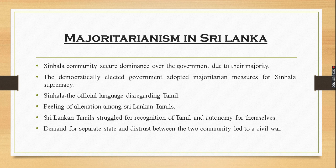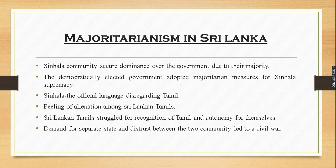They felt that the constitution of Sri Lanka and the government policies denied them equal political rights and equal opportunities. Because of this, relations between the Sinhala community and the Tamil community got strained over time. The Sri Lankan Tamils launched parties and struggles for the recognition of Tamil as an official language, for regional autonomy, and equality of opportunity. Since most of their demands were rejected and suppressed, their demands went on increasing.